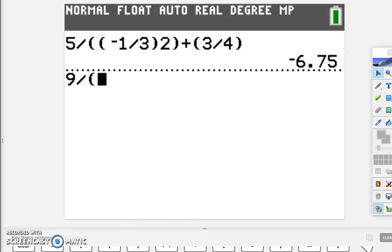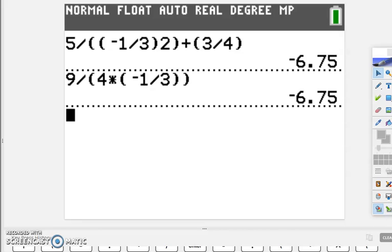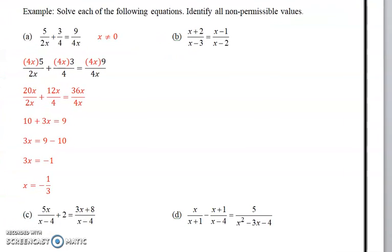Then we'll write the other side: 9 divided by (4 times negative 1/3), and I get negative 6.75. So that shows it's the correct answer. The left side and the right side both equal negative 6.75. I didn't do that on my page, but I punched it in my calculator and you're good to go.